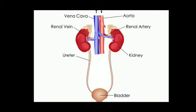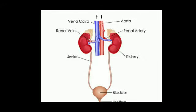These nephrons consist of Bowman's capsule, glomerulus and collecting duct. Just as the artery and veins that arise from the lungs are named as pulmonary artery and pulmonary vein, in the same way the artery and veins that arise from the kidney are named as renal artery and renal vein.